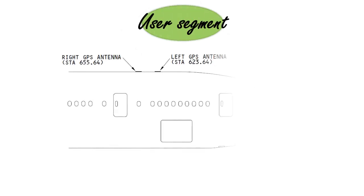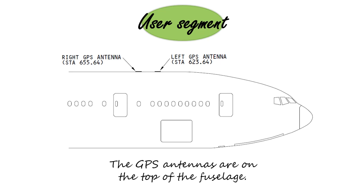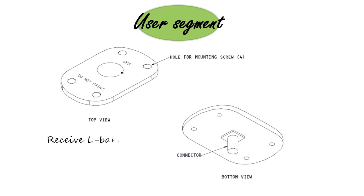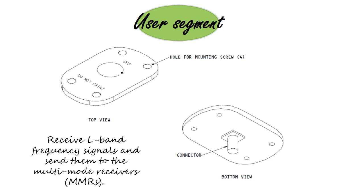The user segment consists of the components installed on the Boeing 777 aircraft. The two GPS antennas are installed at the top of the fuselage and are called the left and the right GPS antennas. The GPS antennas receive L-band frequency signals and send them to the multi-mode receivers, or MMRs. The GPS antenna impedance is 50 ohms.